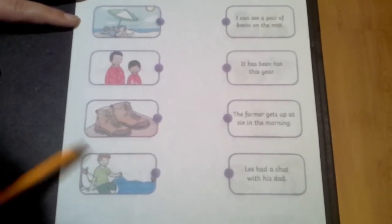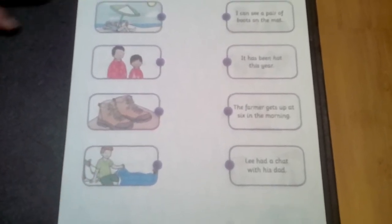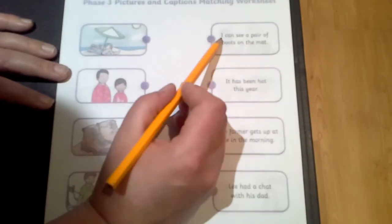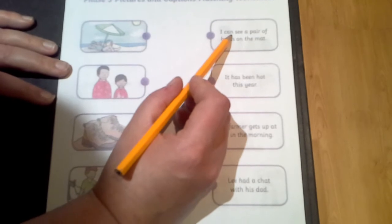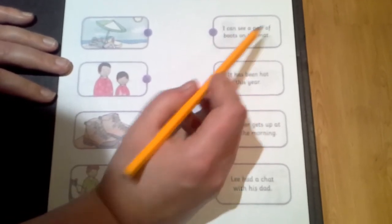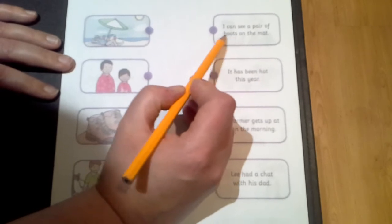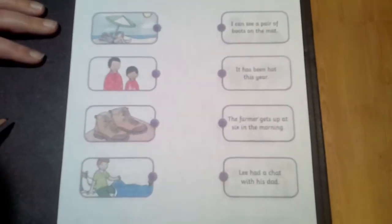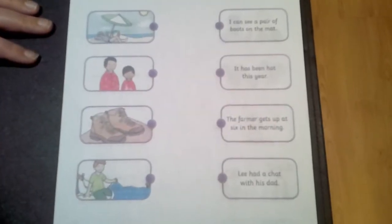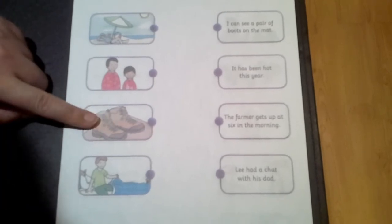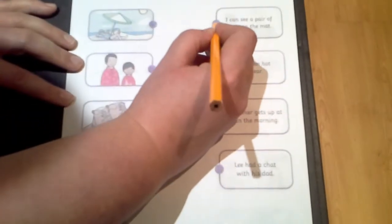And here we've got somebody getting out of bed. So let's read, can you read with me? I can see a pair of boots on the mat. So which picture matches that caption? I can see a pair of boots on the mat. That's right children, it's here.